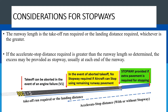Takeoff run will be from threshold to threshold — that will be the takeoff run available. But if in the process of takeoff there is a need to abort at V1, then the distance or the remaining pavement of the takeoff run is declared as the accelerate-stop distance. If the pilot can stop before the end of the remaining takeoff run, then there is no need for a stopway. But if the pilot requires more pavement to stop beyond the takeoff run available, then the extra pavement required for that stopping process is called a stopway.